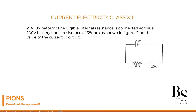We have a 10 volt battery of negligible internal resistance — so we are assuming internal resistance is 0. It is connected across a 200 volt battery, and a resistance of 38 ohm, as shown in the figure.